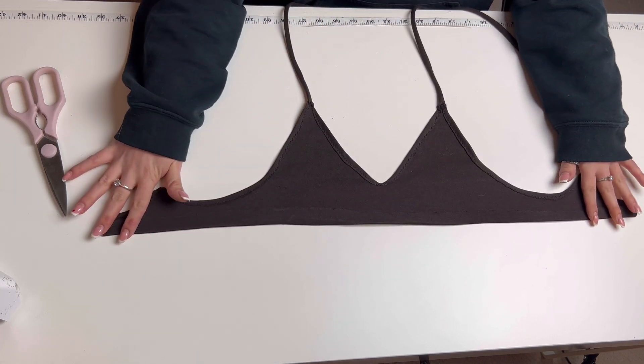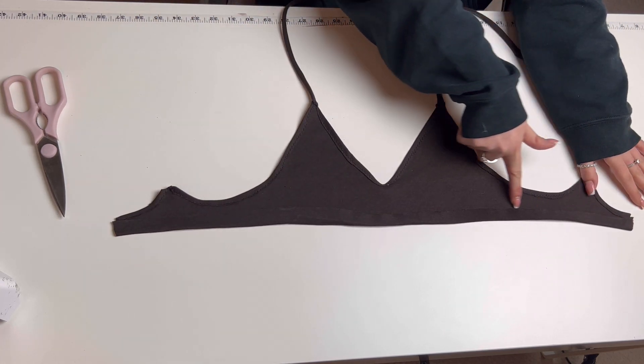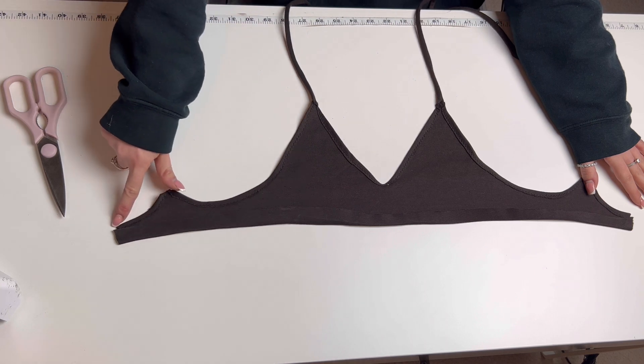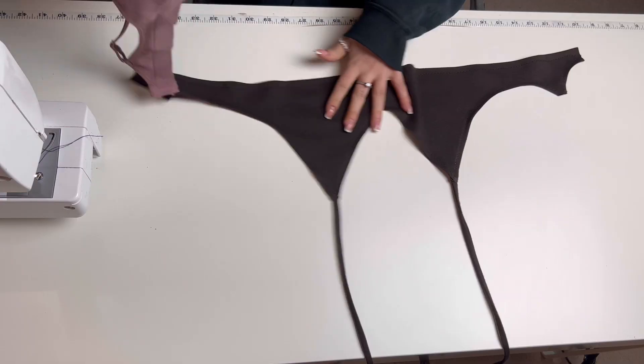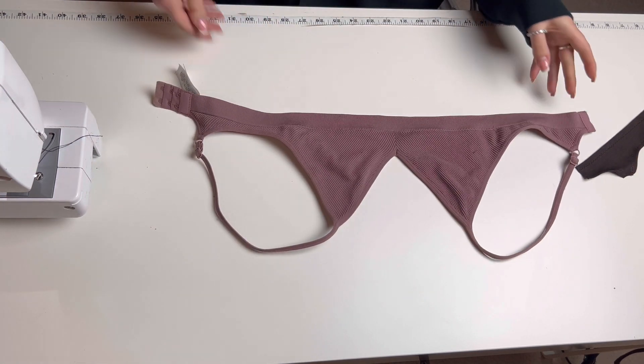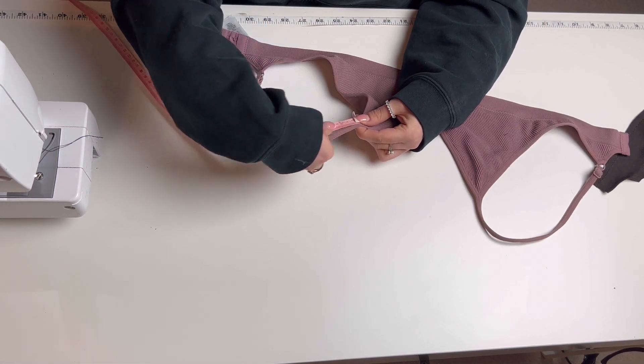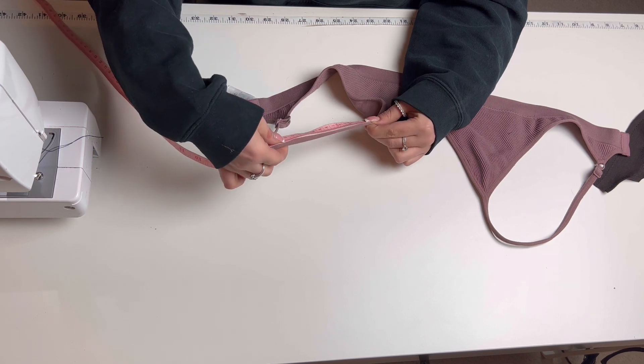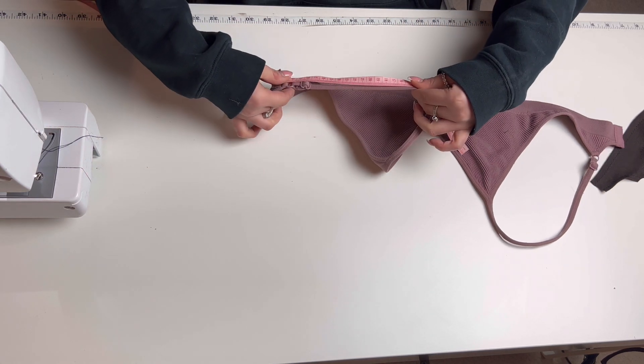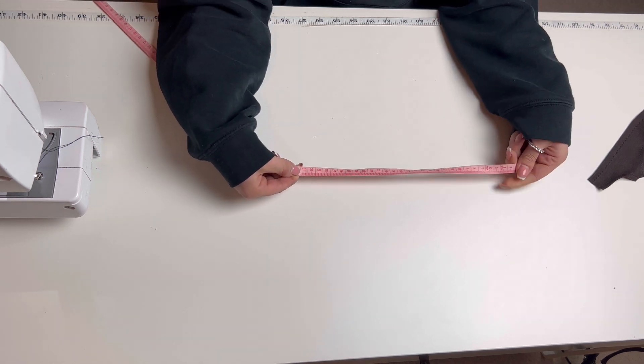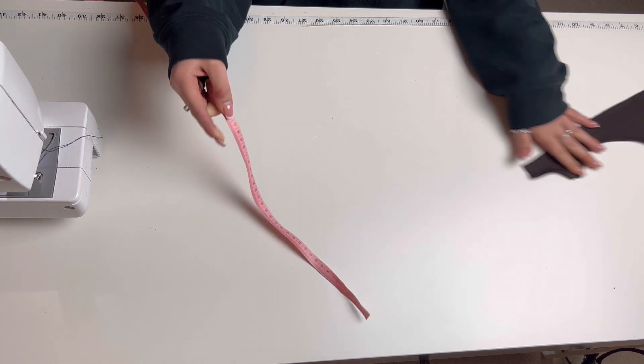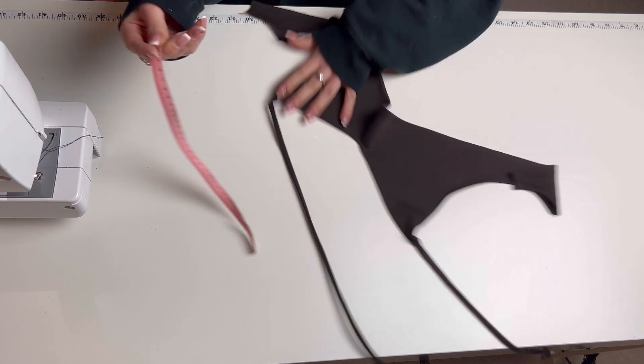Once you've hemmed the top it's time to hem the bottom, so take your raw edge and fold it over and sew with a zig zag stitch. Now we need to measure the straps on our original bralette so we know how long we need the straps to be on our bralette. Take those measurements to your garment and cut off any extra straps you don't need.